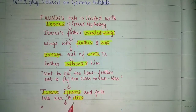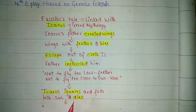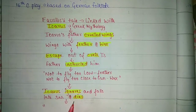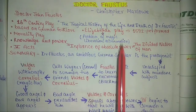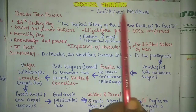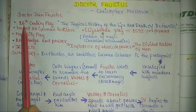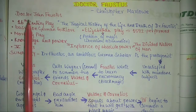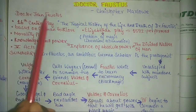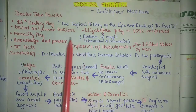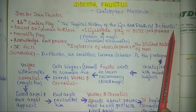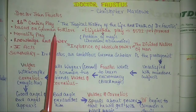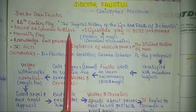This is the connection with Dr. Faustus. Now, what is there in the story of Faustus? Dr. Faustus was written by Christopher Marlowe, who belongs to the 16th century and is contemporary to William Shakespeare. The full name of Dr. Faustus is Dr. John Faustus, and the original name of the play is 'The Tragical History of the Life and Death of Dr. Faustus.' This is based on German folklore.